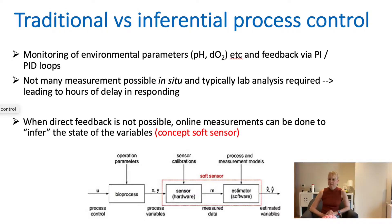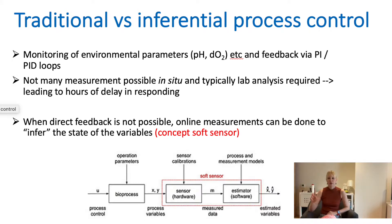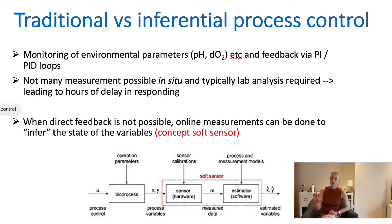So what do we do instead? Often you use another variable to estimate something else — and to estimate is also to infer — so that's why it's called inferential control. This is where modelling comes in because you need some software for it. You have the hardware, which is the sensor that actually measures in the reactor, and then there's what they call the soft sensor. The soft sensor looks at the hardware that measures something, the variable you're estimating, and then a model that links a particular variable to something else.